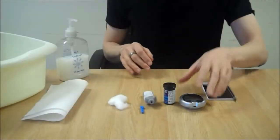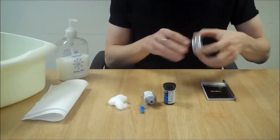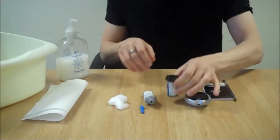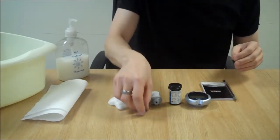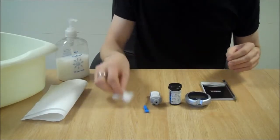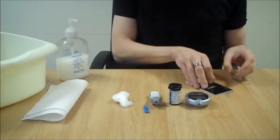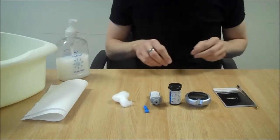Prepare your kit. You will need a meter, test strips, a finger pricker or lancing device, a lancet, cotton wool, and a monitoring diary to record the results.